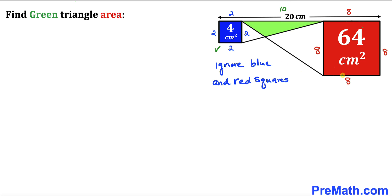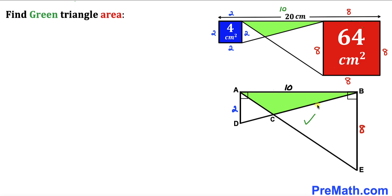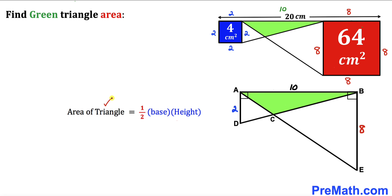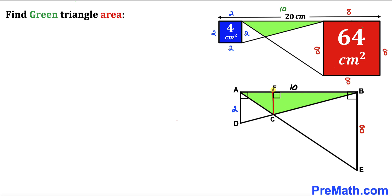Let's ignore the blue and red squares and focus on the green triangle, labeled ABC, whose base is 10 cm. Side AD equals the blue square's side length (2 cm) and side BE equals the red square's side length (8 cm). To find the area using Area = ½ × base × height, we need to determine the height. I've drawn perpendicular FC and labeled this height as h.